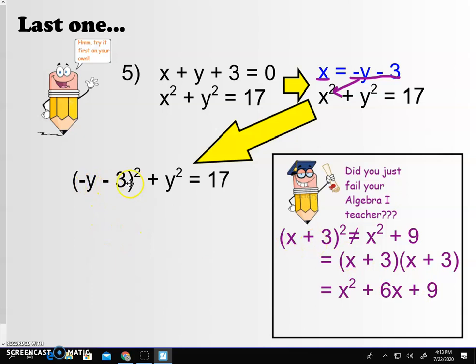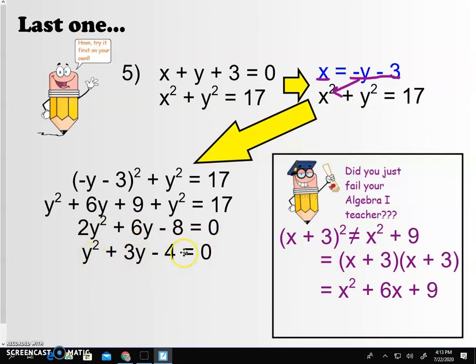So negative y minus 3 squared is y squared plus 6y plus 9 plus y squared equals 17. Getting everything over to one side, we've got to factor this. And just a side note, do you notice that I could divide both sides by 2, make this a much nicer number to deal with? So factoring that, obviously we're going to have a y and a y. Let's see, negative 4 and 3, I think that's right. You need to be good at factoring. If not, let me know and I'll get you the practice you need. Finally, we can solve this and we get y equals negative 4 or 1.